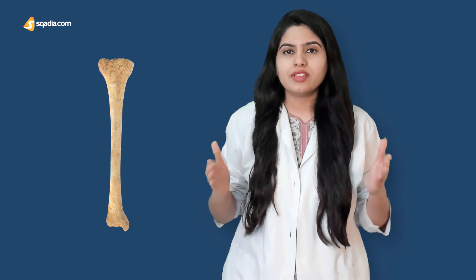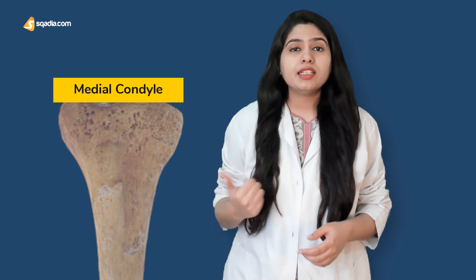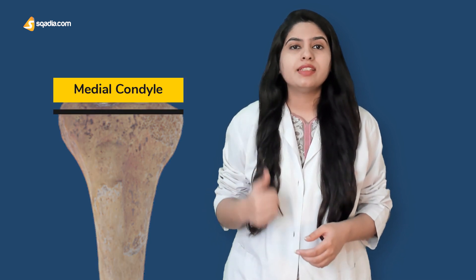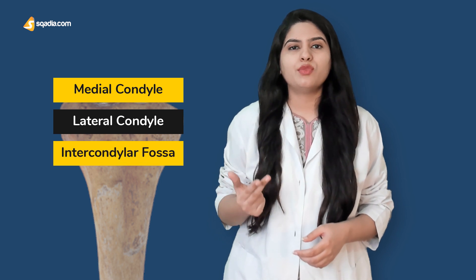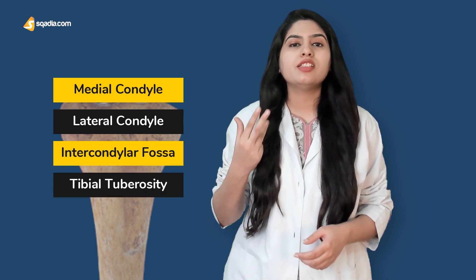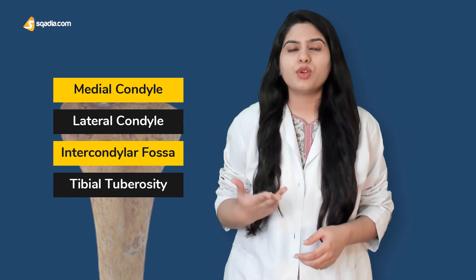The proximal end is the upper portion of the tibia. It is slightly larger in size than the distal part. The upper end contains four important bony features: the medial condyle, the lateral condyle, the intercondylar fossa, and the tibial tuberosity.